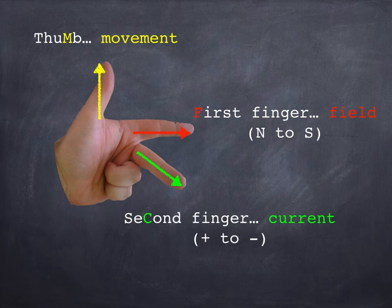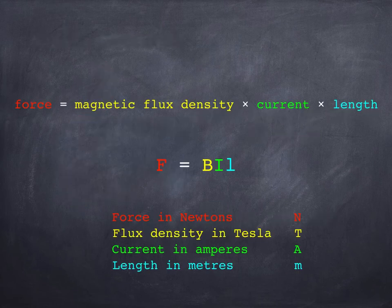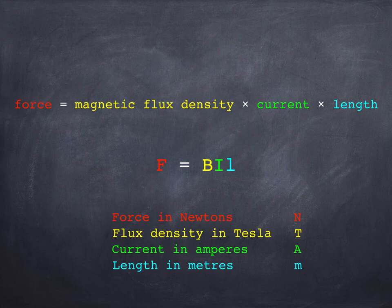This will give us the direction of the force, but to get the size of the force we need an equation, and it's one of the few equations that you are actually given in your GCSE paper. Here it is. The force on the wire equals the magnetic flux density—that's a measure of the field strength of the magnet—multiplied by the current through the wire, multiplied by the length of the wire. We abbreviate that to F equals BIl.